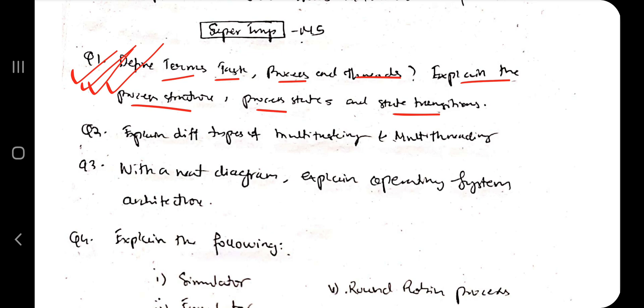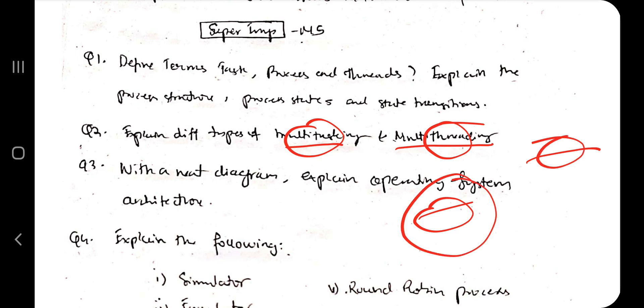Next, we have the difference between multitasking and multi-threading. A simple one-line difference is there that you need to know, and after that you have to add extra points regarding whatever you know in each of these domains.